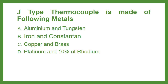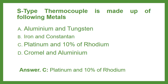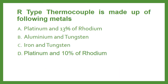S-type thermocouple is made of the following elements: Option A Aluminium and Tungsten, Option B Iron and Constantan, Option C Copper and Brass, or Option D Platinum and 10% Rhodium. The answer is Option D: Platinum and 10% Rhodium.